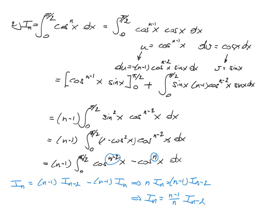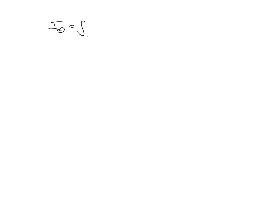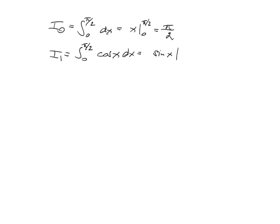We can use i_0 and i_1 to build all other integrals. i_0 is the integral from 0 to pi over 2 of dx, which equals x evaluated from 0 to pi over 2, giving pi over 2. Then i_1 is the integral from 0 to pi over 2 of cosine x dx, which equals sine x from 0 to pi over 2, giving sine of pi over 2 minus sine of 0, which is 1 minus 0, so i_1 equals 1.